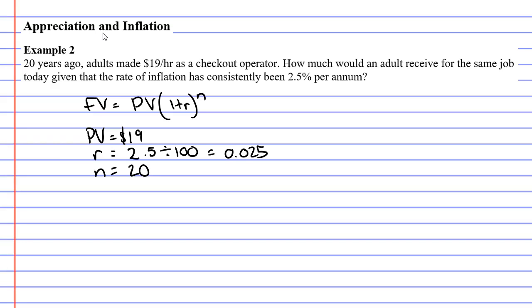We're going to plug all these values into our formula. We're finding FV, our future value: PV is 19, times bracket 1 plus R, R being 0.025, to the power of N, or to the power of 20.